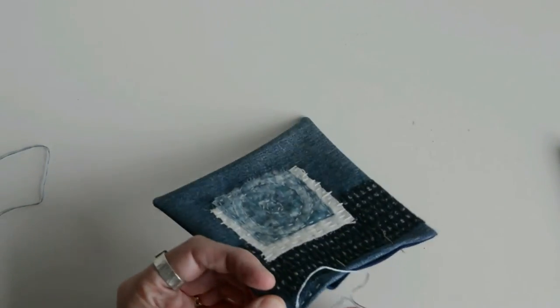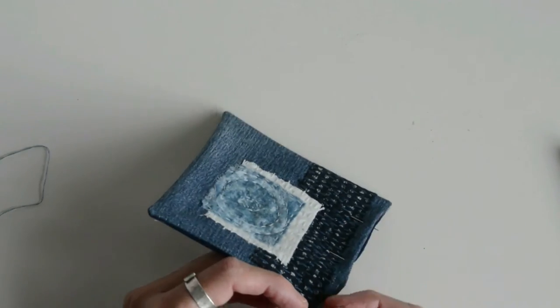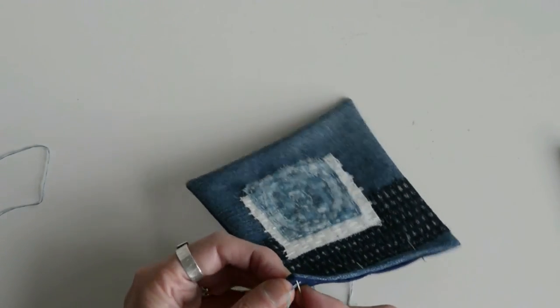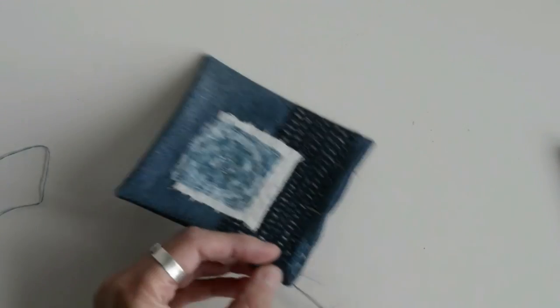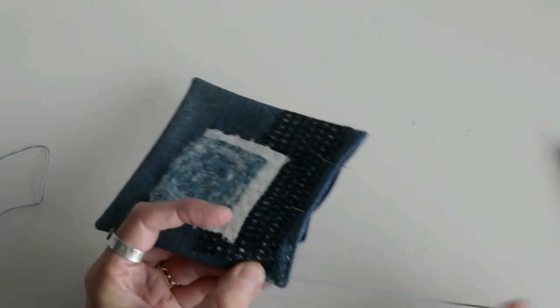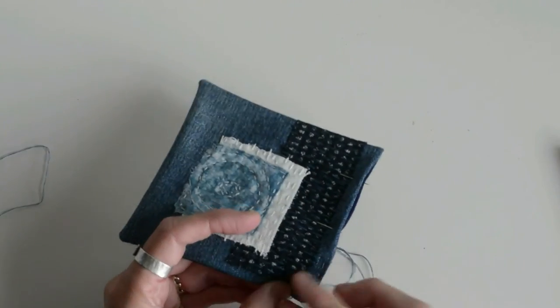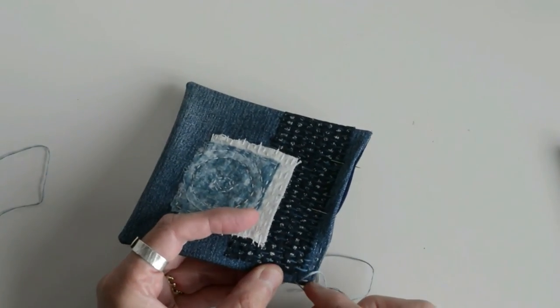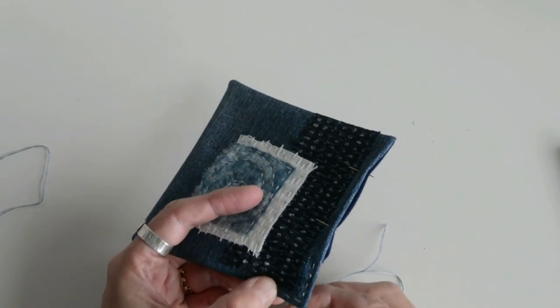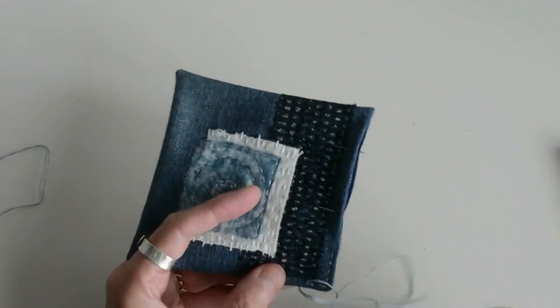So I'm just doing even hand stitches all the way around the coaster. Taking care of the corners obviously, to get a nice crisp edge if at all possible. You're obviously going to do this for all four coasters.